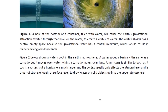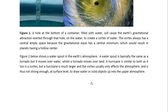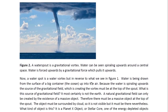Figure two below shows a water spout in the Earth's atmosphere. A water spout is basically the same as a tornado, but it moves over water, whilst the tornado moves over land. A hurricane is similar to both, as it too is a vortex, but a hurricane is much larger, and the vortex usually only affects the atmosphere and is not strong enough at surface level to draw water or solid objects up into the upper atmosphere. A water spout is a gravitational vortex — actually the same as a vortex in water, except it acts in the opposite direction.